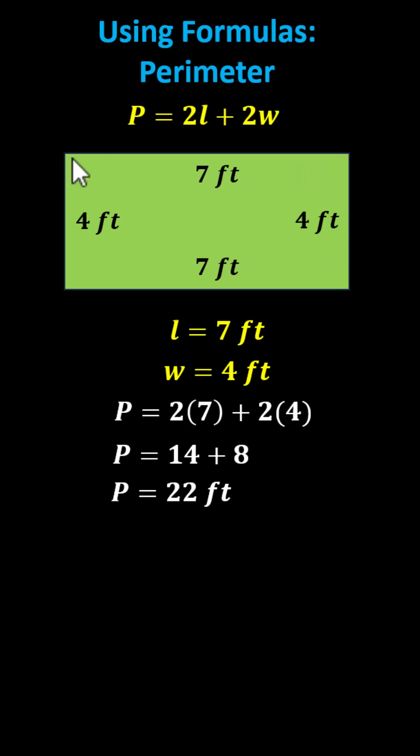For example, if we started here in the upper left hand corner and walked clockwise around the rectangle, the perimeter is equal to 7 feet plus 4 feet plus 7 feet plus 4 feet, which gives us the same result of 22 feet.